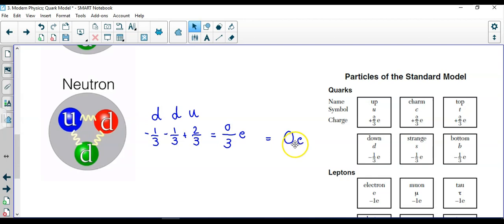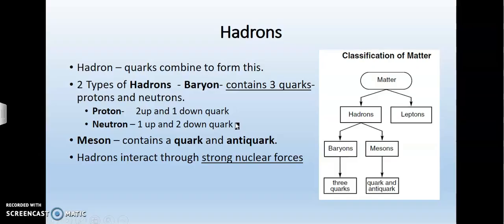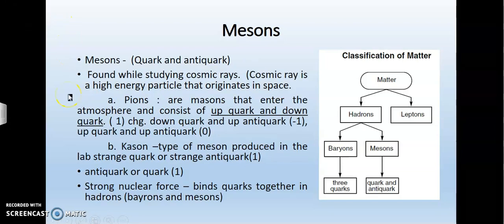A meson contains only a quark and an anti-quark. Hadrons interact through strong nuclear forces. The strong nuclear force only acts within the radius of the atomic nucleus. It does not go beyond that. Mesons are medium weight particles composed of quark and anti-quark. They are found while studying cosmic rays. A cosmic ray is a high energy particle that originates in space. The pion - these are mesons that enter the atmosphere and consist of an up quark and a down quark. An up quark and a down quark have opposite charges, and their total charge comes out to be zero, but a strong nuclear force binds quarks together.